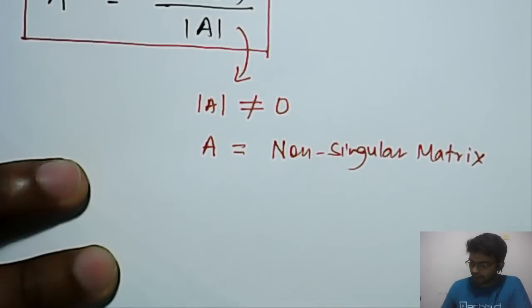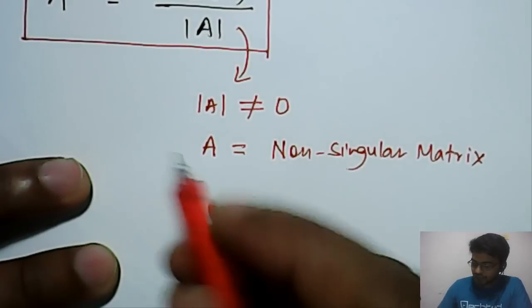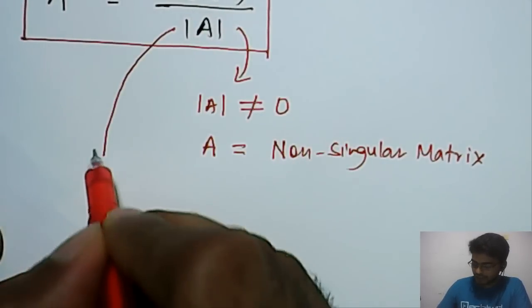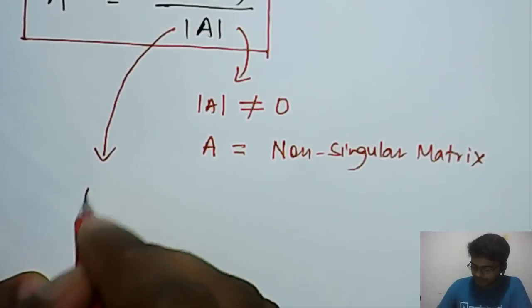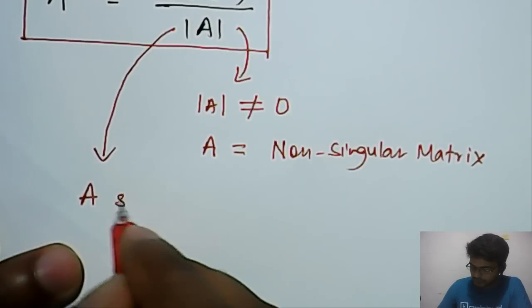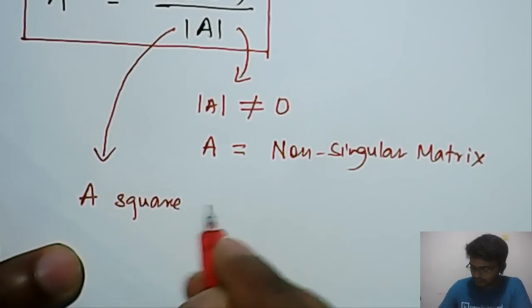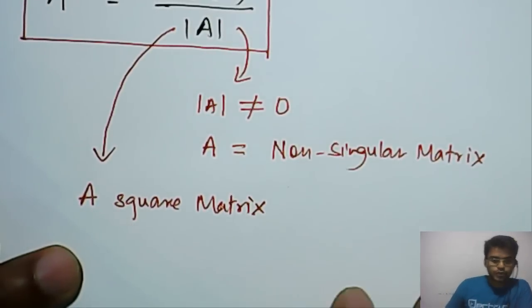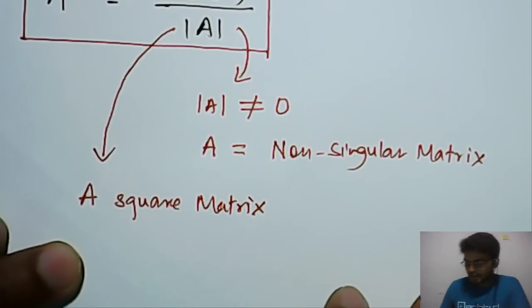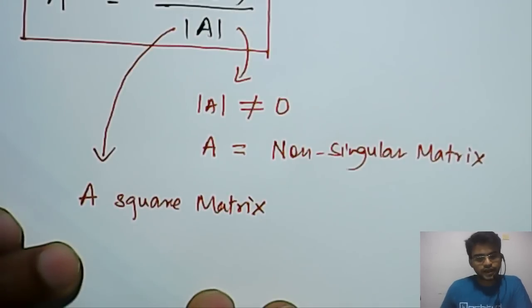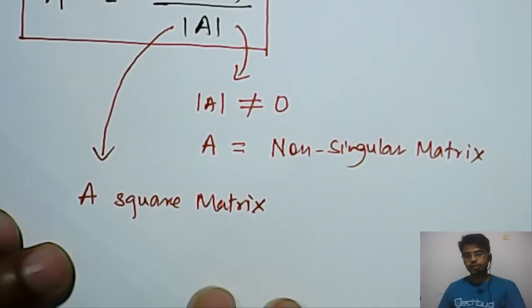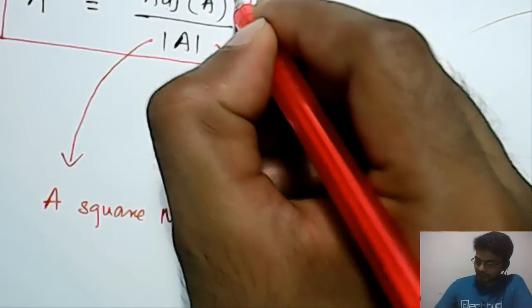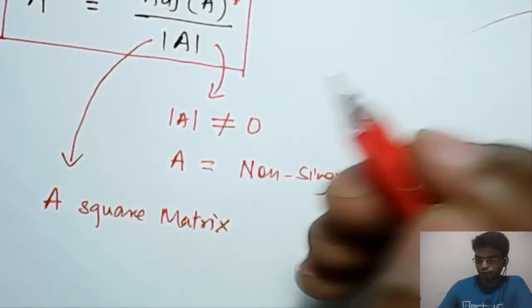Now, let's understand this adjoint A. Here, as we are talking about this determinant again, so it's very clear that A will be a square matrix. So two things are there. First is A will be a square matrix and A will be a non-singular matrix. Now, let's understand this adjoint A. What is this adjoint A?